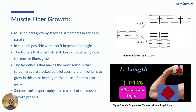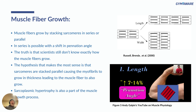Muscle fibers grow by stacking sarcomeres in series or in parallel — either end-to-end or side by side to get thicker. You might wonder: if sarcomeres stack in series, wouldn't the muscle get longer? What actually happens is a change in pennation angle of anywhere from seven to fourteen percent, as shown in the diagram from Dr. Galpin. That angle change allows more sarcomeres to fit without changing the actual length of the muscle itself. The science still doesn't know exactly how muscle fibers grow, but it's likely either in series or in parallel.